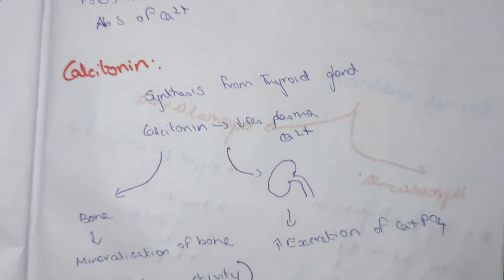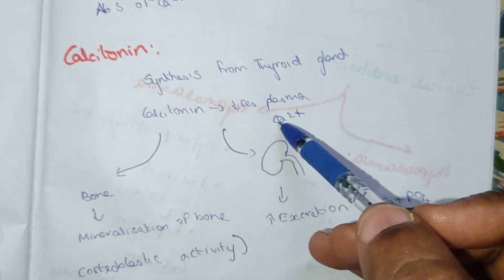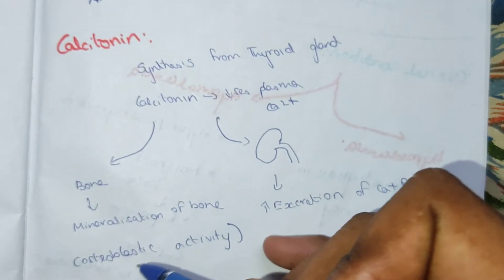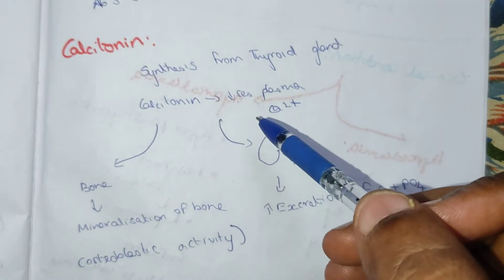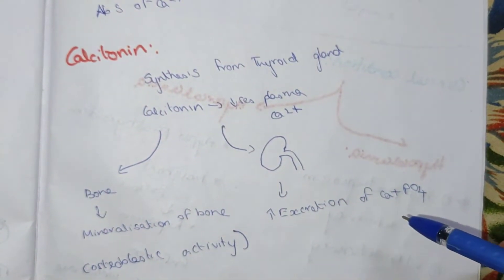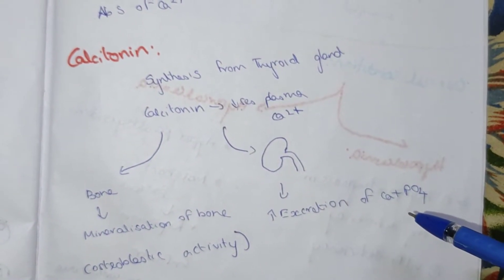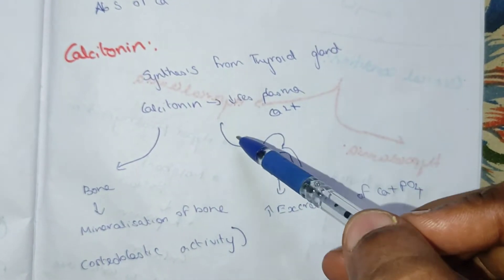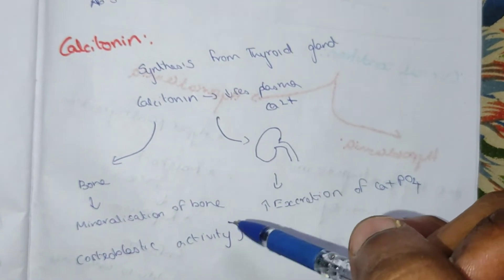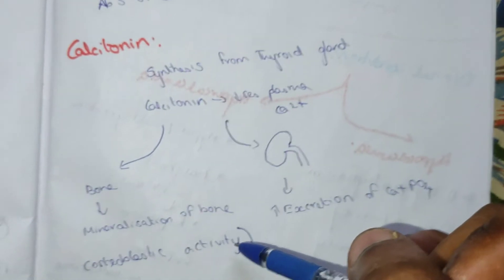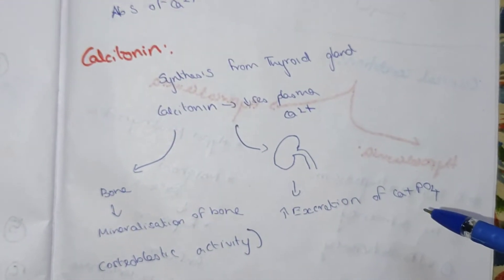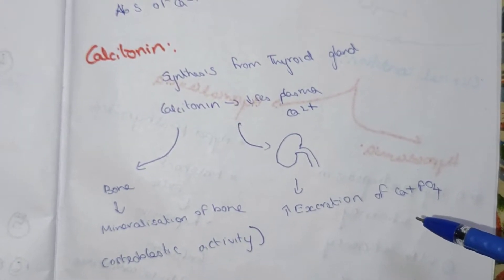Calcitonin is synthesized from the thyroid gland. It decreases plasma calcium levels. In bone, it promotes mineralization and inhibits osteoclastic activity. In the kidney, it increases excretion of calcium and phosphate. Thus, the main concept of calcitonin is to decrease plasma calcium, in contrast to vitamin D which causes demineralization and increases calcium.